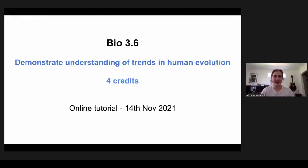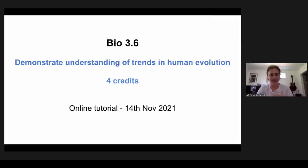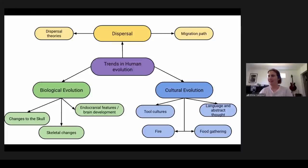I'm Emma Campbell, and I'm going to take you through trends in human evolution today, so Bio 3.6. One thing I really want to reiterate with this topic is it's called trends in human evolution — we're looking at how our ancestors have changed over time. A lot of people get quite caught up in memorising specific detail about different ancestors, but it's much more about bigger picture thinking and how things have changed from five, six million years ago through to today. It's a full credits internal and external, and it's always super fun to teach and learn about. I like to visualise a topic, and you can break this topic up into three key areas.